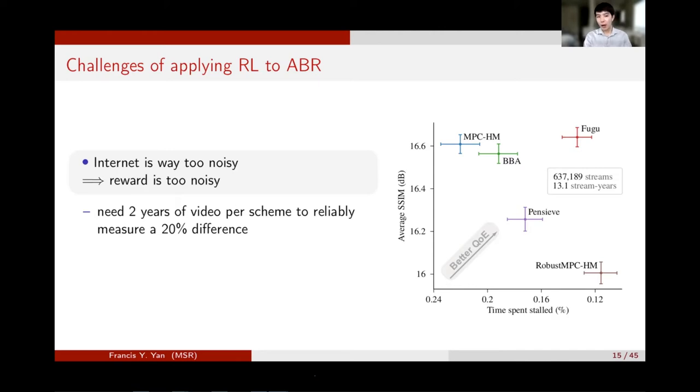This is bad news for RL because RL relies on being able to slightly vary an action and detect a change in the resulting reward. Now, our results show that you can't detect a change in the reward even if you completely replace the algorithm and run it for a month, let alone tweak an action. So the takeaway is the internet is way more noisy than we thought, based on our experiment on video streaming.